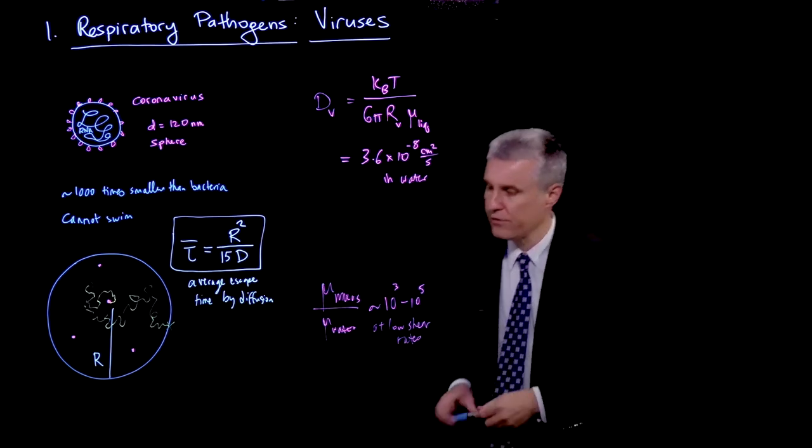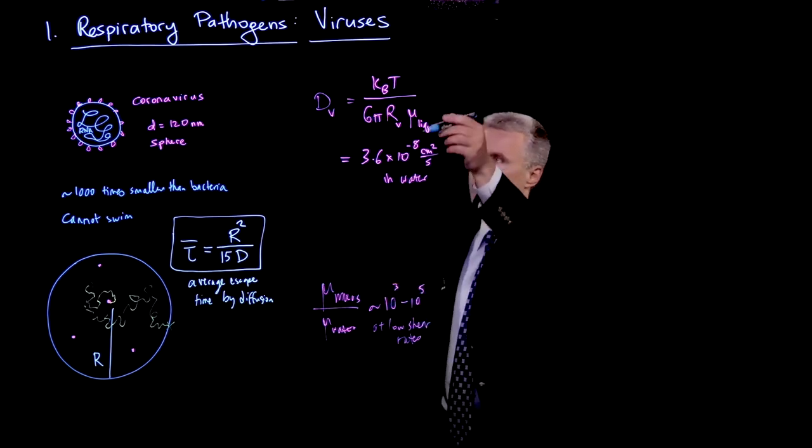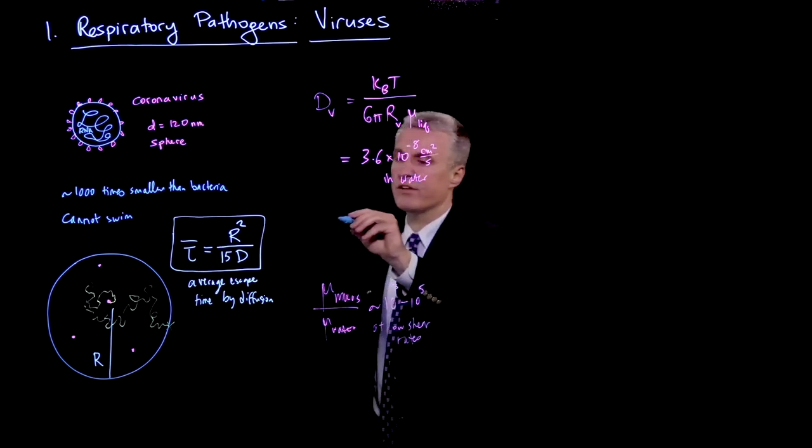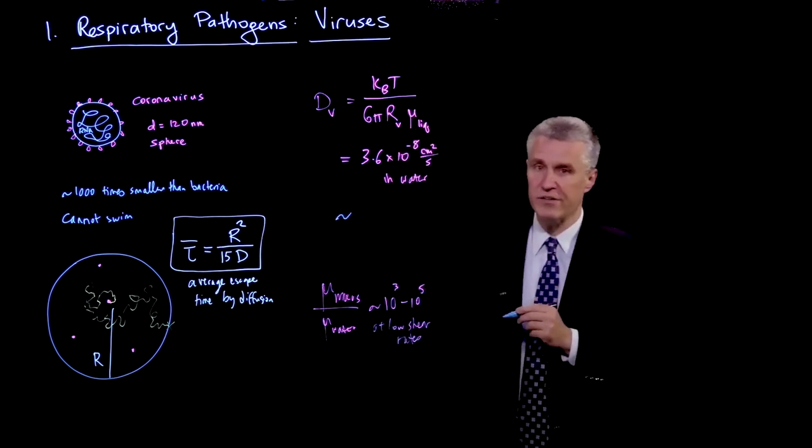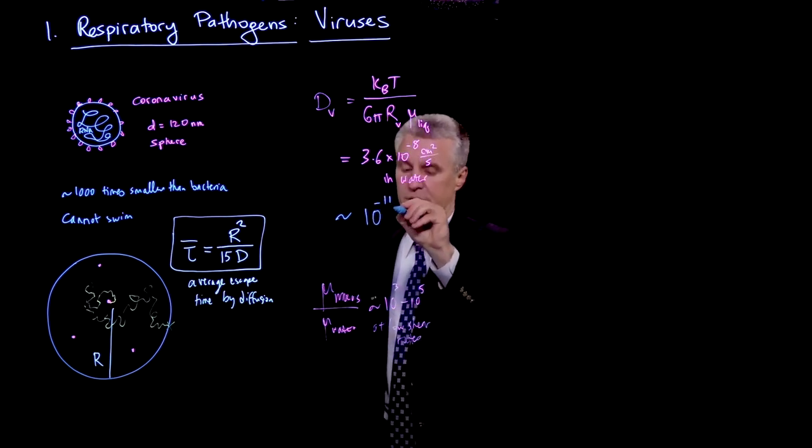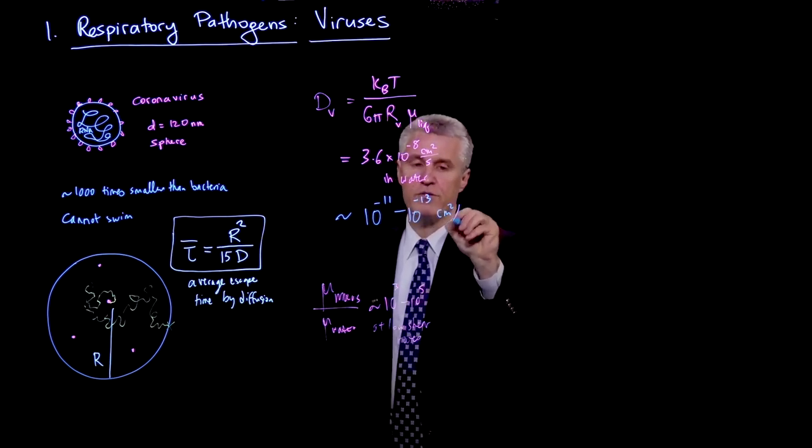So we're looking at 10 to the minus 11 to 10 to the minus 13 centimeters squared per second in mucus. And so because the viscosity has that factor, the diffusivity is then divided by that factor. So what that's telling us is instead of being around 10 to the minus 8 centimeters squared per second, we're really looking at more like 10 to the minus 11 to 10 to the minus 13 centimeters squared per second in mucus.